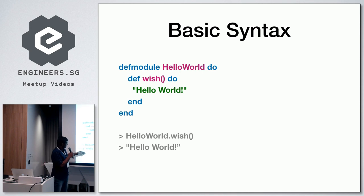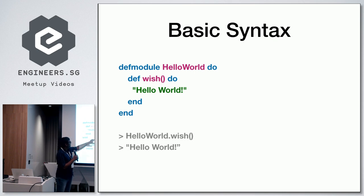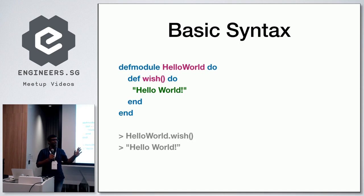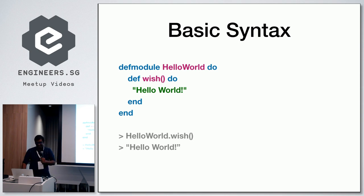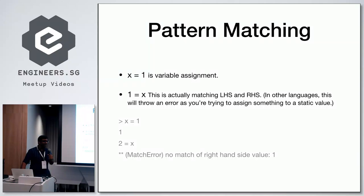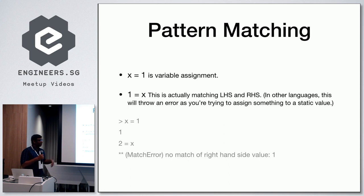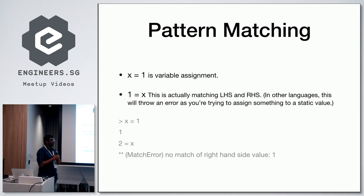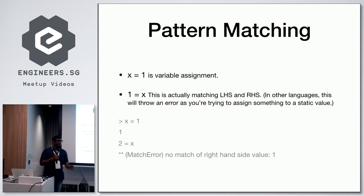This one slide looks very simple, but actually 90% of Elixir code is just going to be like this. There's a module definition on top — I'm defining a module called Hello World — and that is a function inside called Wish, returning the string 'Hello World'. This is how I would call or execute this function: put the module name, call the function, and it will return the value. So this is very simple. This is one important concept before you can really say you know Elixir, which is pattern matching.